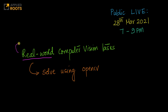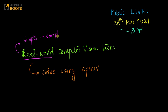We will start with some simple examples, like how do you detect simple anomalies in a video, or how do you detect edges in an image. We will start with simple examples and then gradually move to slightly more complex examples in this live session.